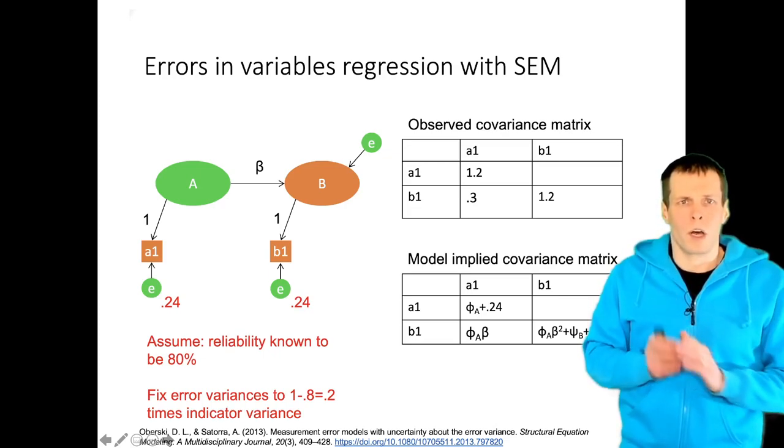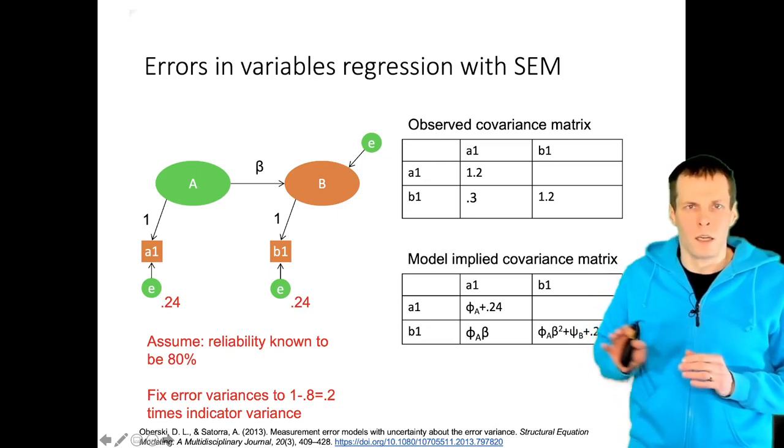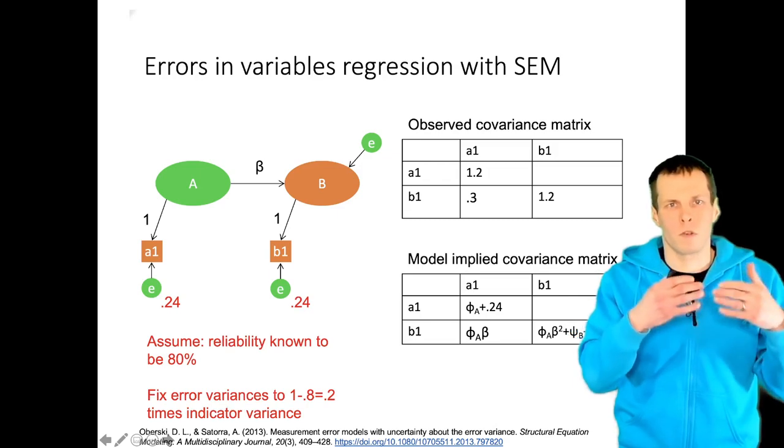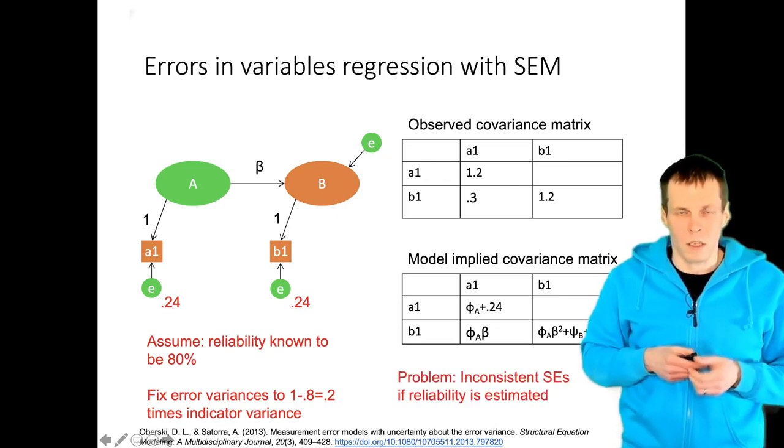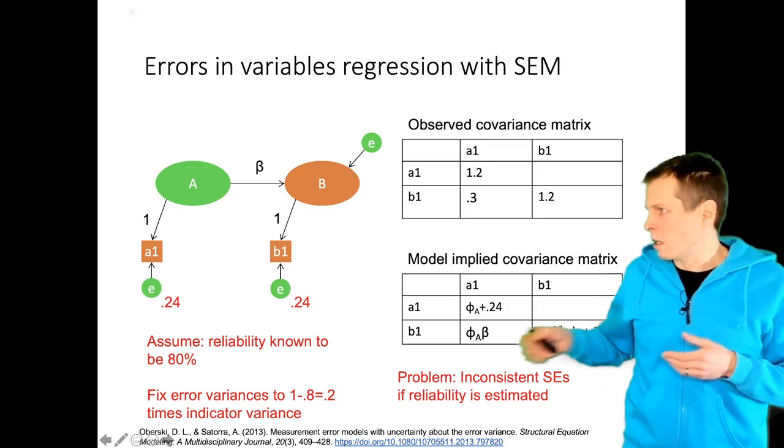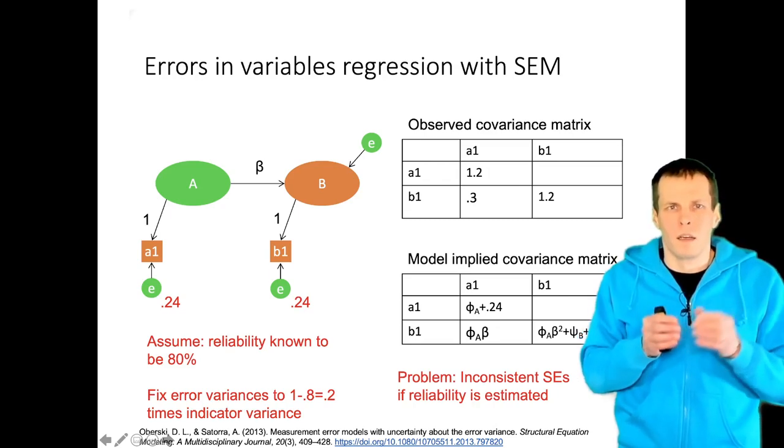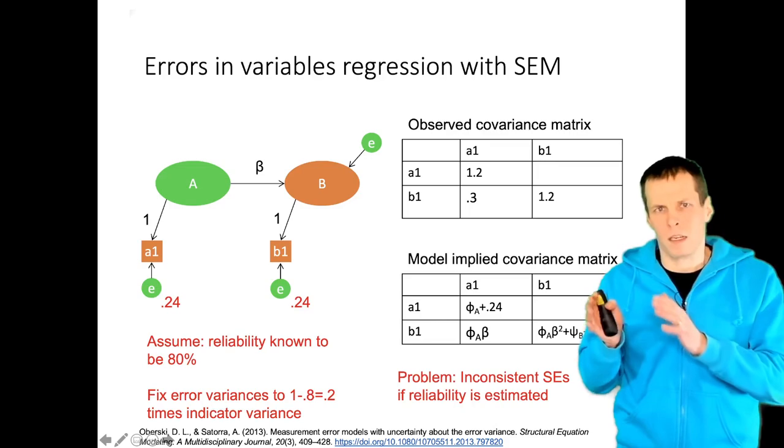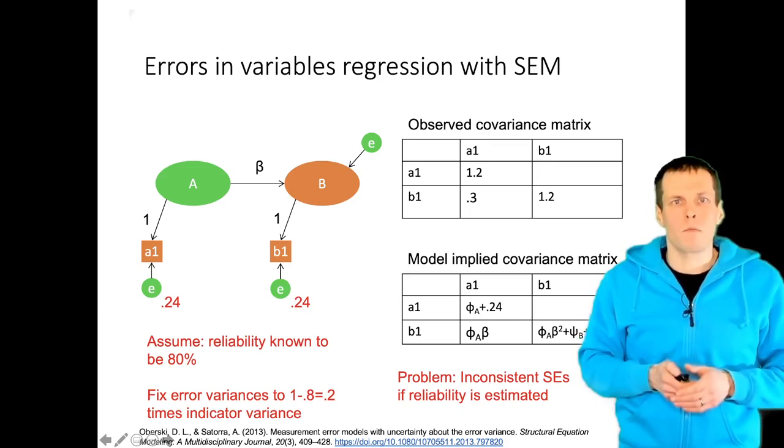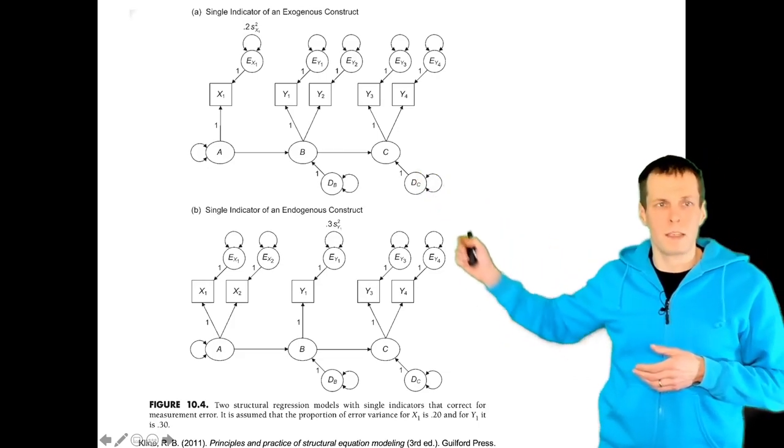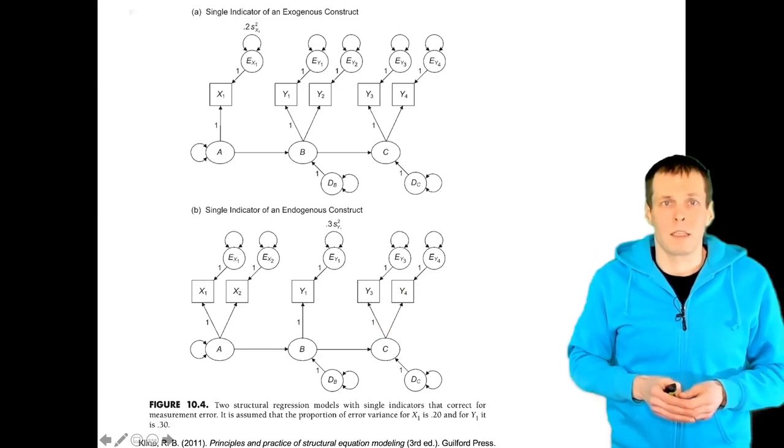This technique has one problem and it is that the reliabilities are typically not known but we estimate them from the data and when we estimate them from the data and we fix them in the SEM estimation, then the SEM software does not know that they are estimated quantities instead of known quantities and that causes our standard errors to be inconsistent. There are some solutions to this problem like Oberski and Satorra talk about in this article, but the solutions tend to be a bit technical and it might be difficult to find any implementation of those solutions. The errors in variables technique is also discussed in Kline's book and he gives examples of how you can fix the measurement error of a predictor variable or a mediator variable to get consistent estimates even if you have measurement error.